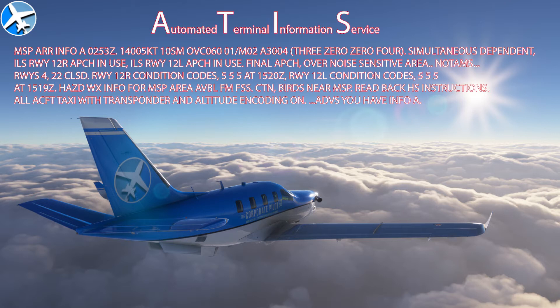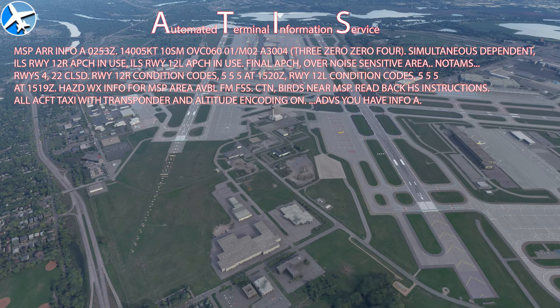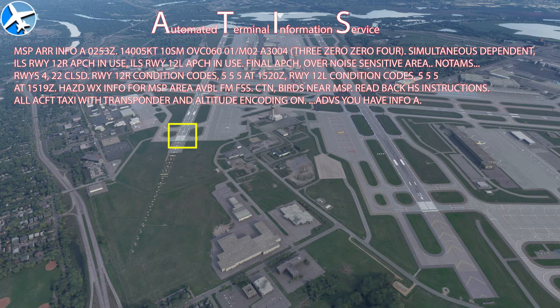So to summarize: the METAR told us what happened. The TAF is telling us what's going to happen. The ATIS tells us what happened weather-wise, but also gives us information on the landing runway and other information pertinent to the airport. ILS runway 12 right and 12 left are the approaches in use, and we won't know which we're assigned until approach control tells us.